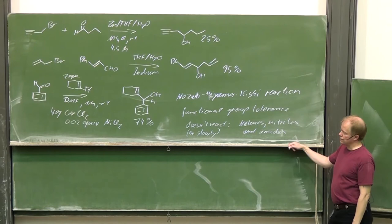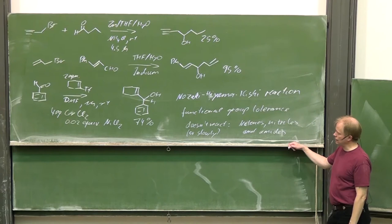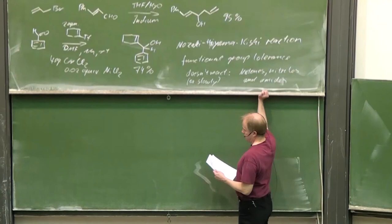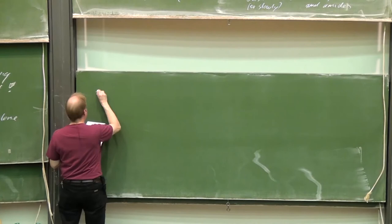It doesn't react, or reacts slowly, with ketones, nitriles, and amides. So that means there might be some examples where the Nozaki-Hiyama-Kishi reaction has to be preferred. On the other hand, one tries to avoid chromium salts out of clear reasons.